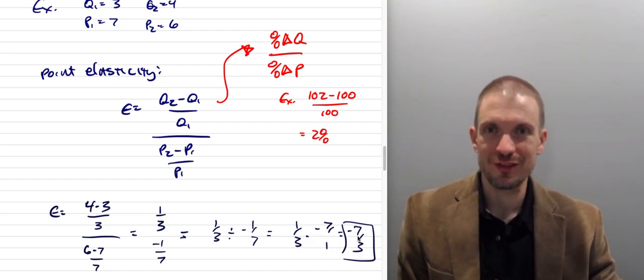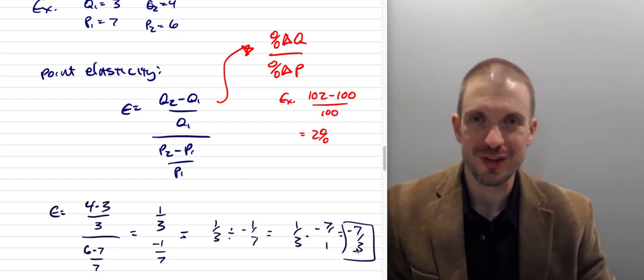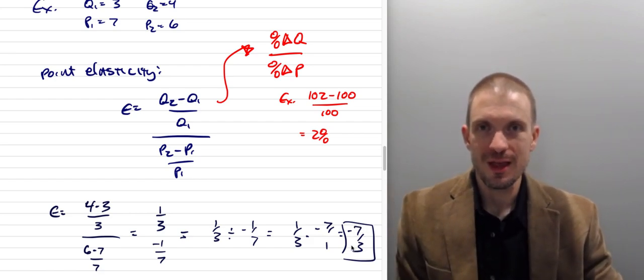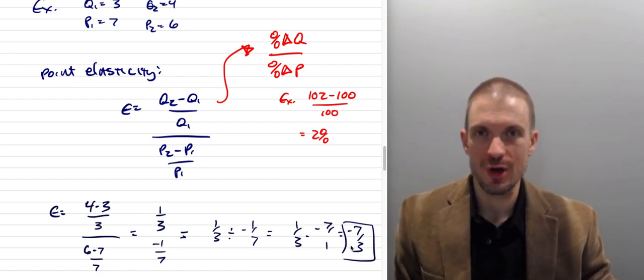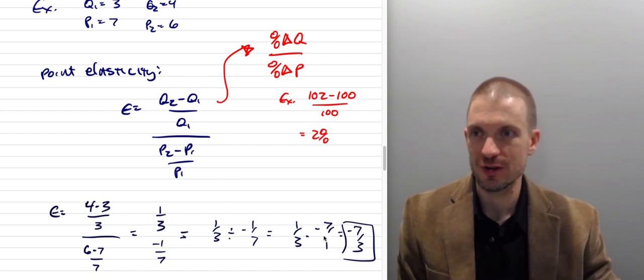Wait a second. That is a larger numerator, smaller denominator. That tells us that this is going to be the elastic part of the demand curve. This is going to be a situation where the percentage change in quantity is larger than the percentage change in price.